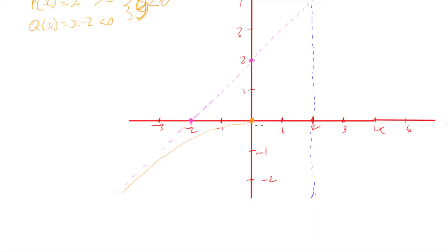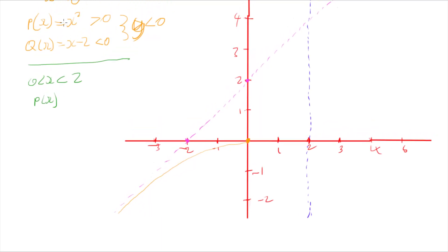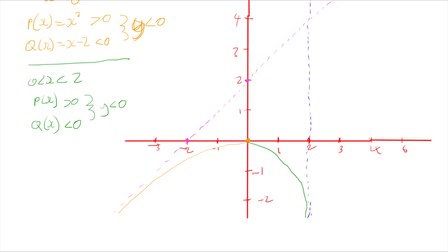Next, I want to look at what happens between my 0 and my asymptote — that's when x is between 0 and 2. p of x, which is x squared, stays positive as x gets bigger. q of x — between 0 and 2 we're always subtracting 2, so it stays negative. So overall I've still got a positive divided by a negative, meaning my function stays negative. As I get closer and closer to 2, I'm going to curve towards my vertical asymptote, so the graph curves down from the origin towards the asymptote at x equals 2.